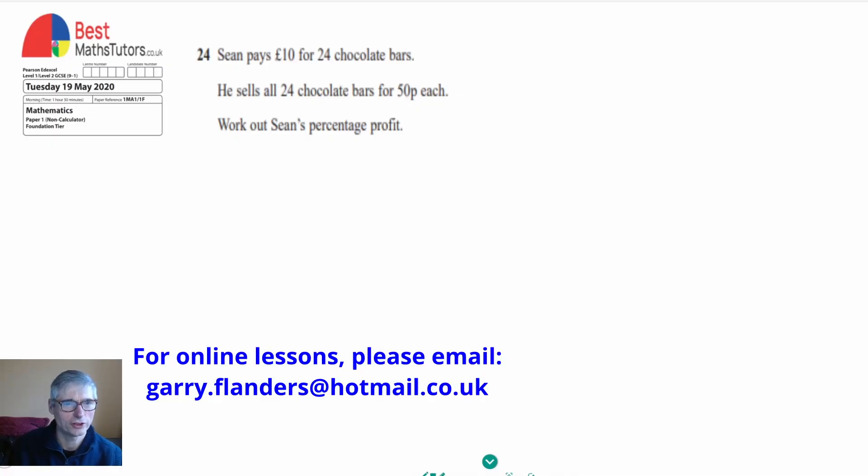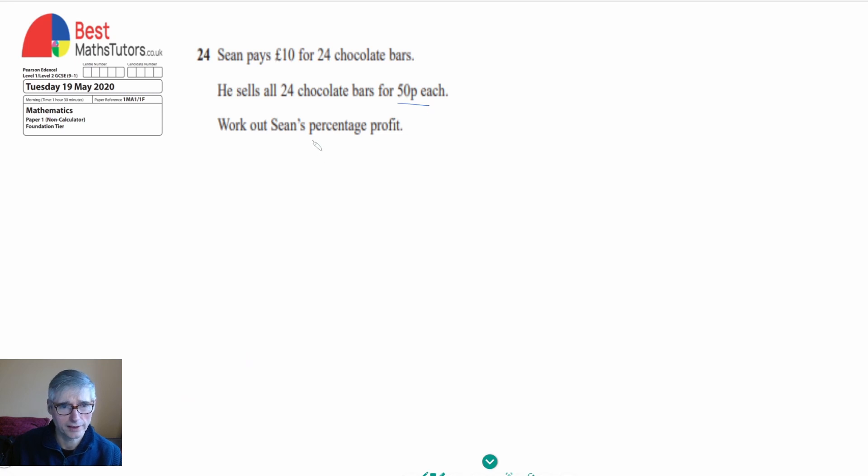This is question 24, a question about percentages. Sean pays £10 for 24 chocolate bars. He sells all 24 chocolate bars for 50p each. We've got to work out Sean's percentage profit.